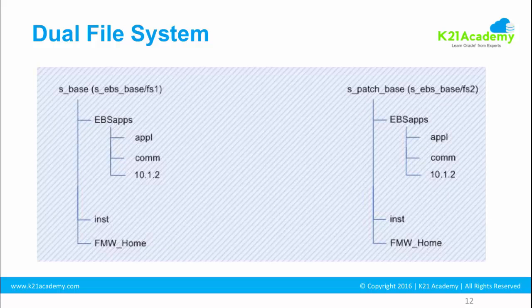Now let's head on to the next lesson where we deep-dive into the dual file system — what fs1 and fs2 contain: the EBS apps directory, APPL_TOP, COMMON_TOP, 1012 Oracle Home, instance home (inst), and FMW home or Fusion Middleware home. Let's go to the next lesson for a deep dive into the dual file system.